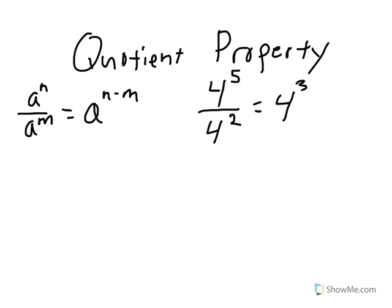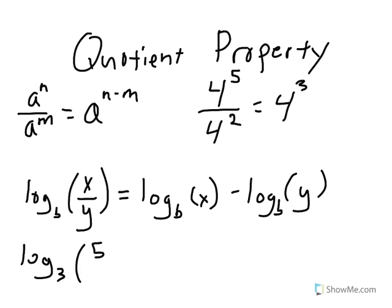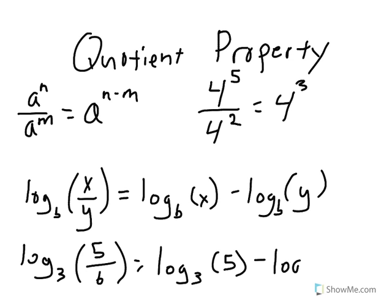In logarithms, the quotient property says that the log base b of x divided by y equals the log base b of x minus the log base b of y. And that's the quotient property.